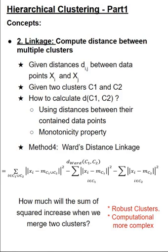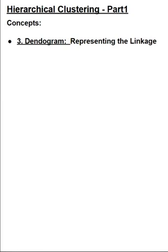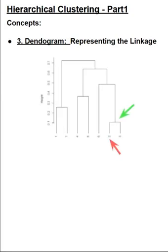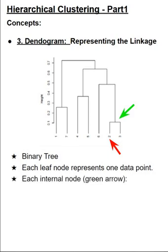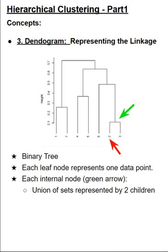Now that we have covered the linkage calculation methods, let's review the next concept, which is the dendrograms. The dendrograms are visually representing the linkage matrix, and it is a binary tree with leaf node representing data points, which is shown in red arrows in the diagram. And its internal nodes, which is shown in green arrow, is a union set of representation of two children that it has been merged. And the height indicates similarity.